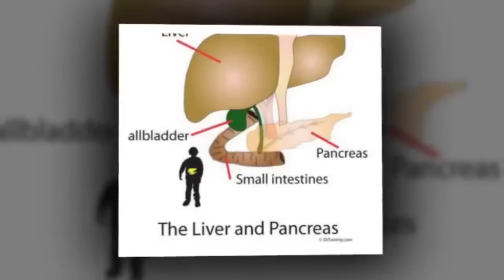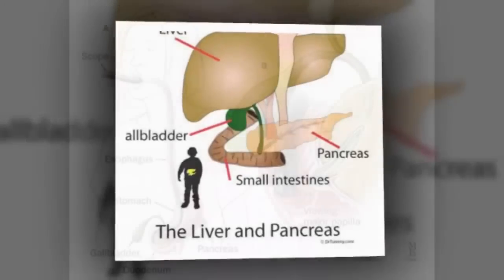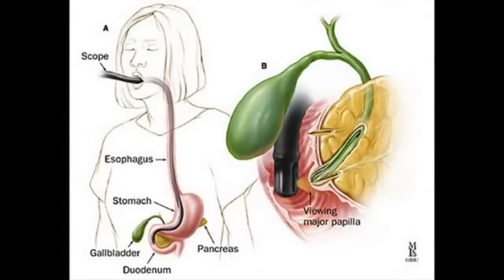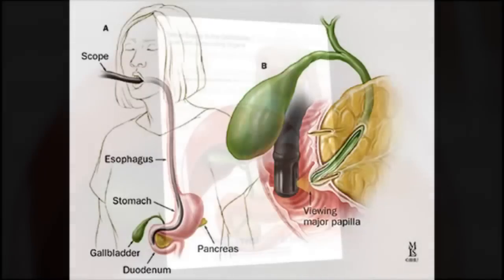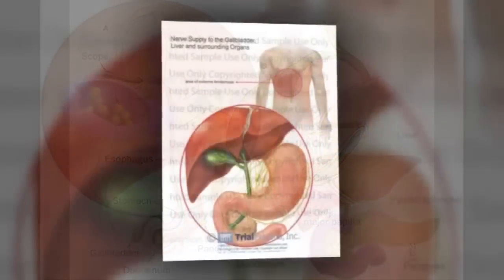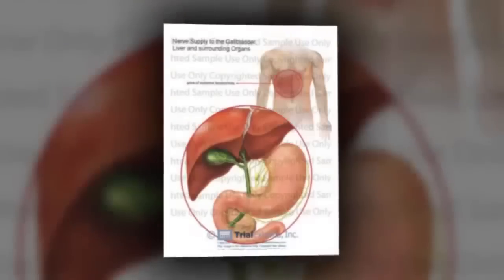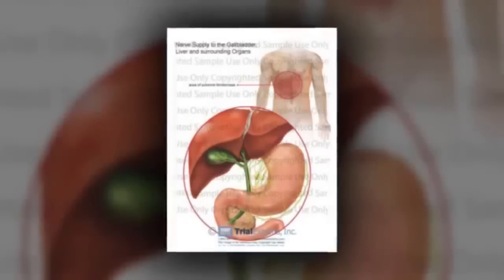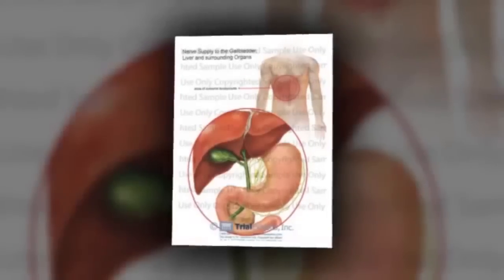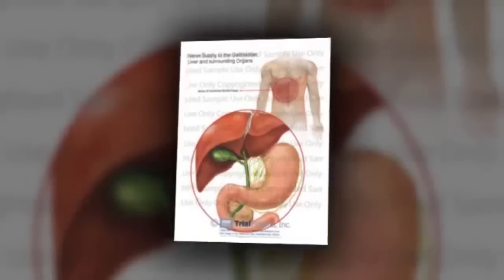Let's start with the first set of problems and consider what happens when the bile becomes too thick or full of stones to reach the intestines in required amounts. The first thing that bile does in the small intestine is to neutralize the acidity of the food coming out of the stomach. In order to disinfect and digest the food that we eat, the stomach secretes hydrochloric acid. The stomach doesn't digest itself because it has a special mucus layer that protects it from this hydrochloric acid.